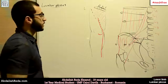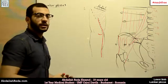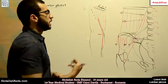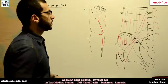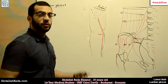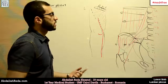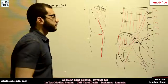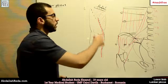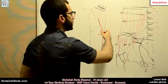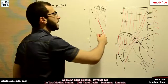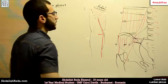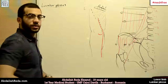The iliohypogastric nerve — from its name — is related to the iliac region and the hypogastric region, meaning the lower part of the abdomen. It gives two branches: one innervates the lateral lower part of the abdominal region, and the other innervates the scrotum.